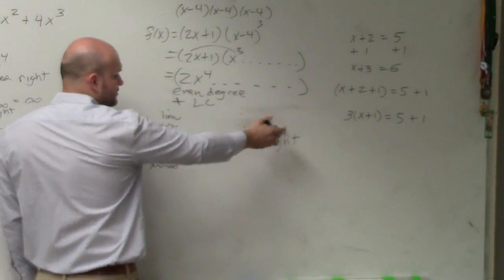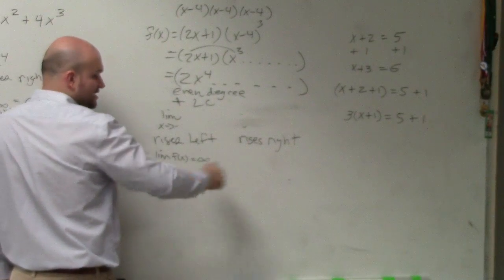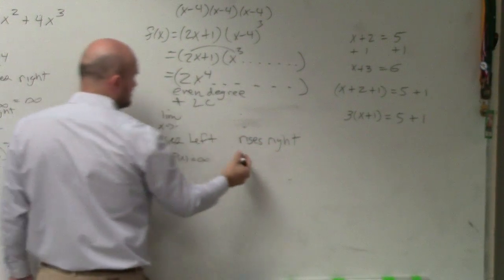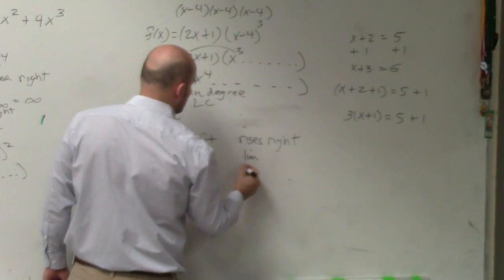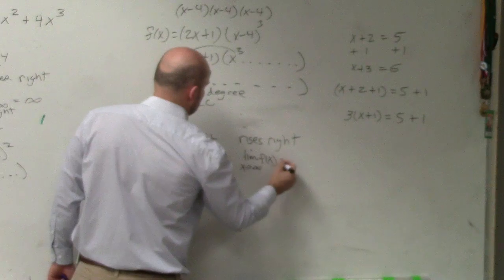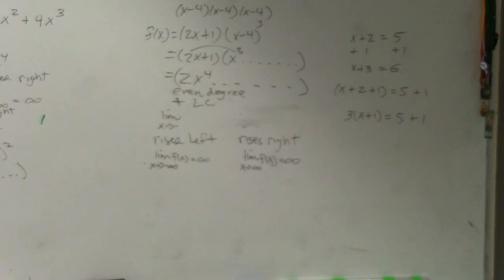And then if it rises to the right, we know it goes to infinity, but x should be going to... actually, x to the negative infinity is to the left. So to the positive infinity would be... or to the right would be x to infinity. OK? So that's how you'd write it using limit notation, which I wanted you guys to practice this with.